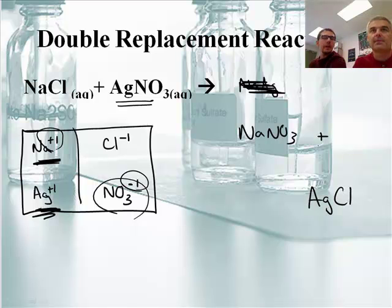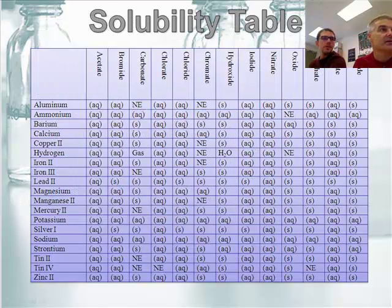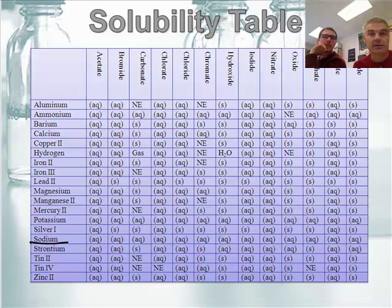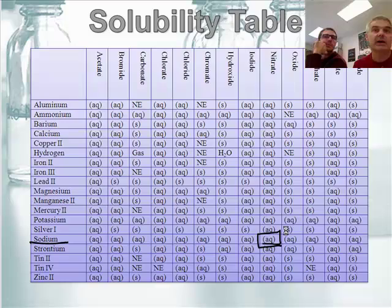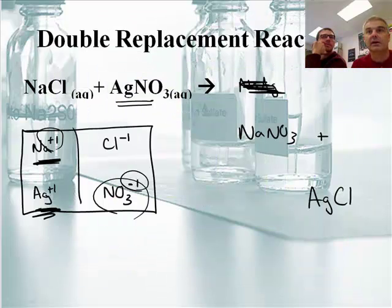And we need to figure out which of those, if any, forms a solid. So now let's go look at our table. So we have sodium nitrate. So sodium is down here. And then I'm going to find nitrate. You guys can all get your table out. Nitrate. Sodium nitrate is right there. That one's aqueous. So I'm going to go back, and I'm going to write AQ next to sodium nitrate.